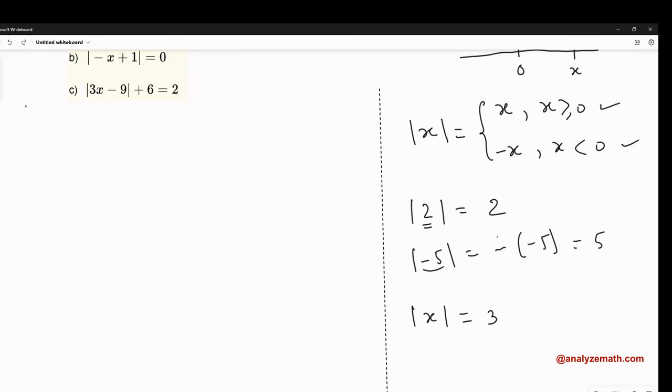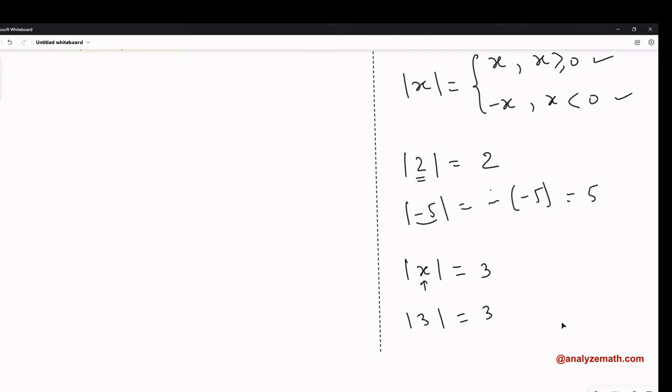Let's look at this simple equation: the absolute value of x equals 3. According to the definition, x can be either 3 because the absolute value of 3 is 3, so x equals 3 satisfies the equation. But also x equals negative 3, because the absolute value of negative 3 is also 3. So this equation has two solutions: x equals 3 and x equals negative 3.